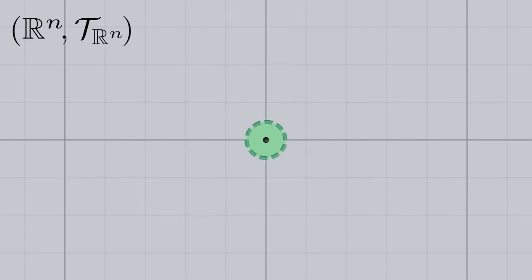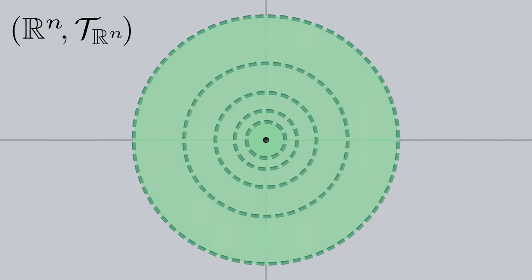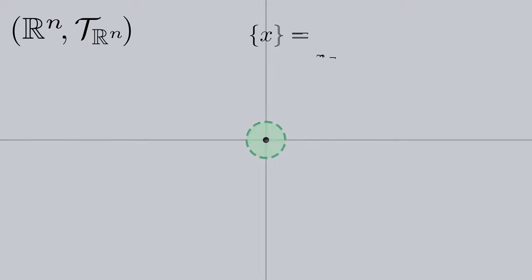Again, we can intersect all of them, zoom in, and find more balls. This continues forever, and the intersection of all the open balls centered at an element is the singleton containing the element, because the element truly is the only point that all the balls share. Also, singletons can't be open sets, at least according to the standard topology. Thus, closure under arbitrary intersections fails.